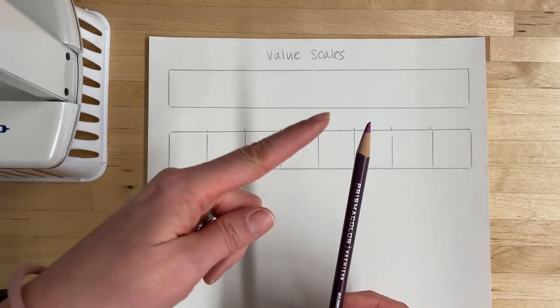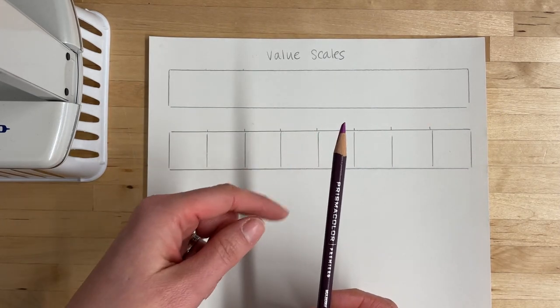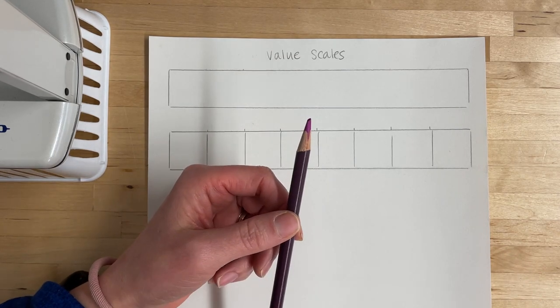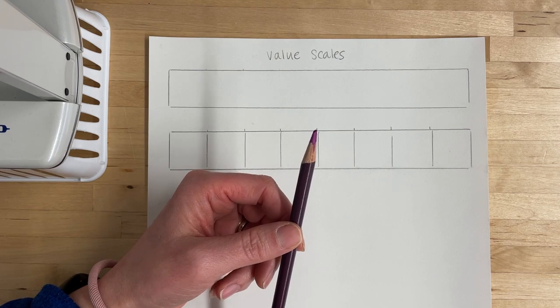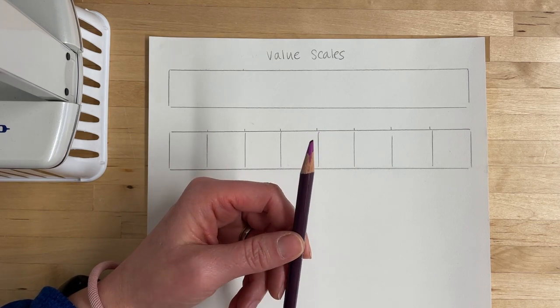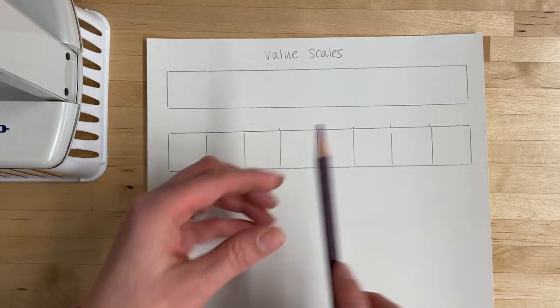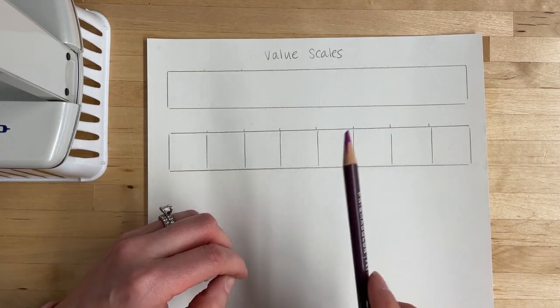You do want to make sure the tip is nice and sharpened. Just like when we did the value scales in the value unit earlier in the semester, we still want to practice using that overhand grip. That's going to ensure our value scale looks nice and smooth and even.